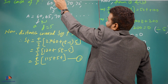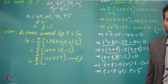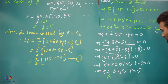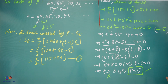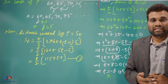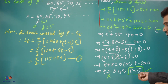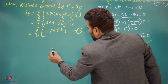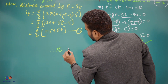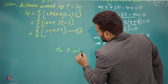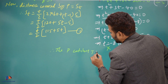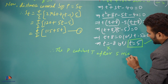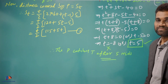Since t represents time, it cannot be negative. Therefore t = 5, which means the policeman catches the thief after 5 minutes. Therefore, P catches T after 5 minutes.